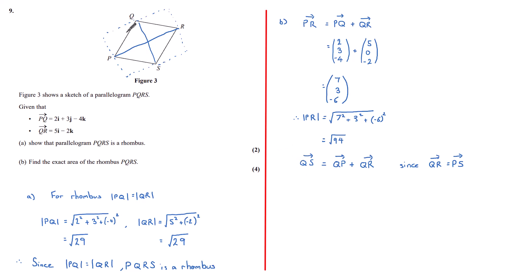So QS can be written as QP plus QR, which again with column notation is minus 2, minus 3, 4 (that's the opposite of PQ) plus QR which is 5, 0, minus 2. This gives us a column vector of 3, minus 3, 2.